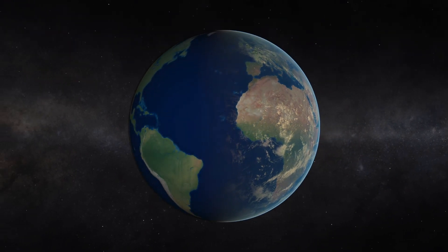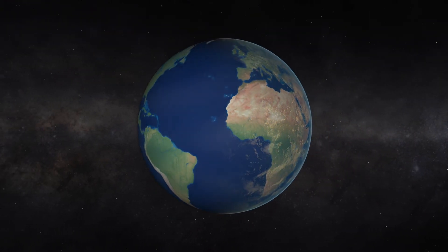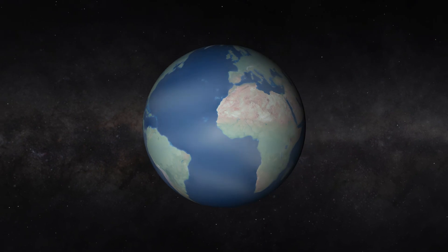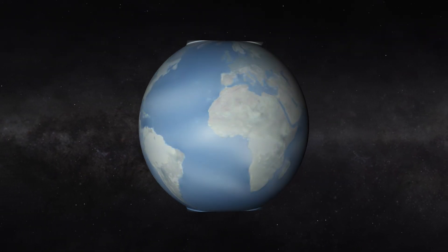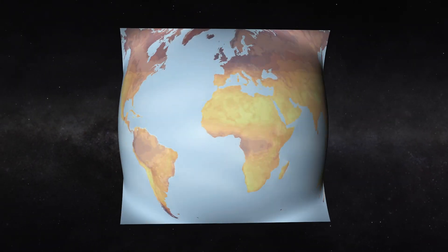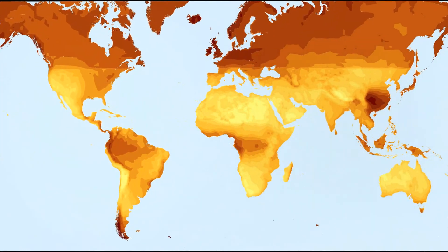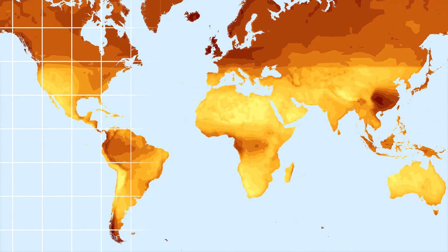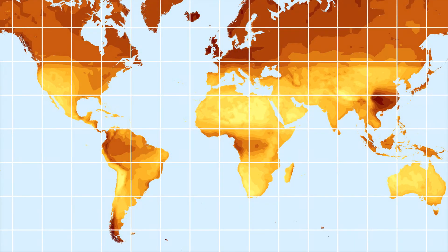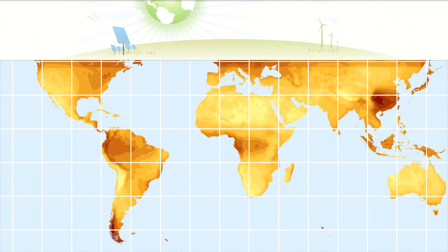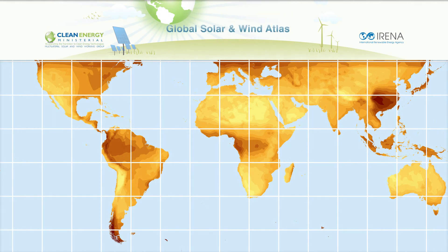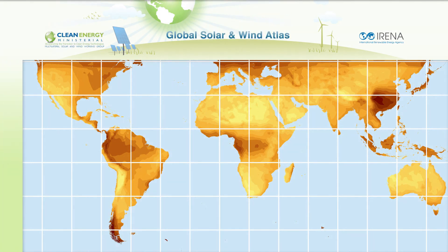The availability of solar and wind resources depends on local weather patterns. The successful implementation of solar and wind energy technologies requires precise information on how much energy is available locally. Raw wind and solar resources are just one part of realizing the renewable energy potential in a given location. Local infrastructure, policies and population centers also play a role.